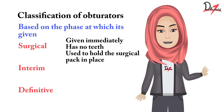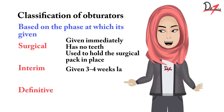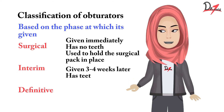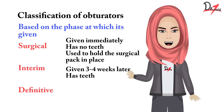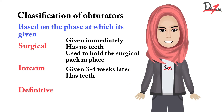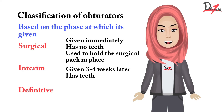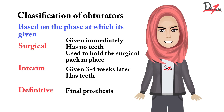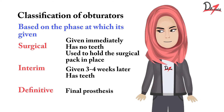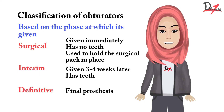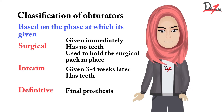Coming to the interim obturator, it has teeth, so it helps the patient with mastication as well. It is usually made up of acrylic. The definitive obturator is the final prosthesis. It also has teeth, and it is usually made up of cast metal.